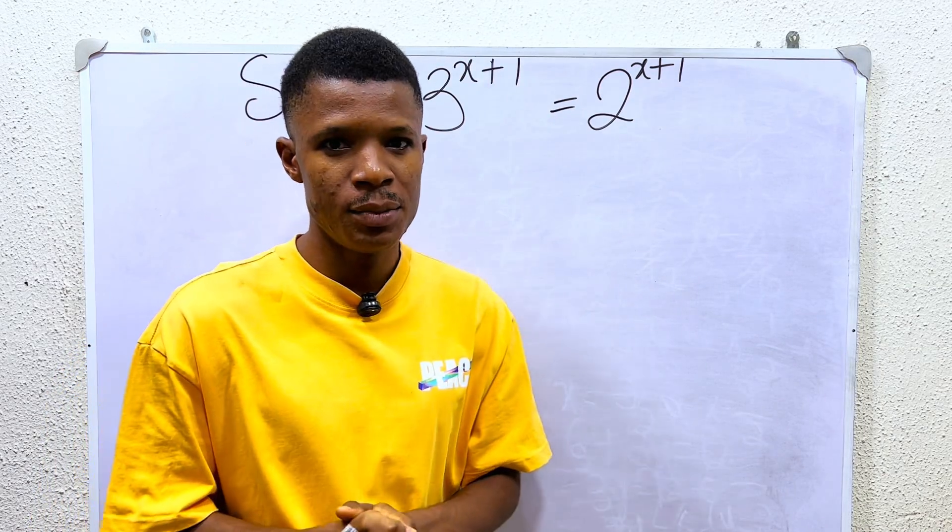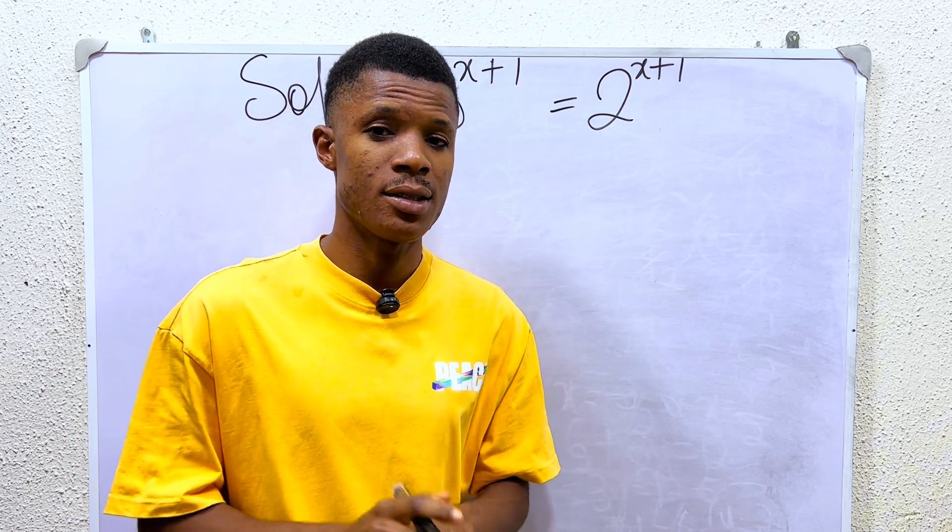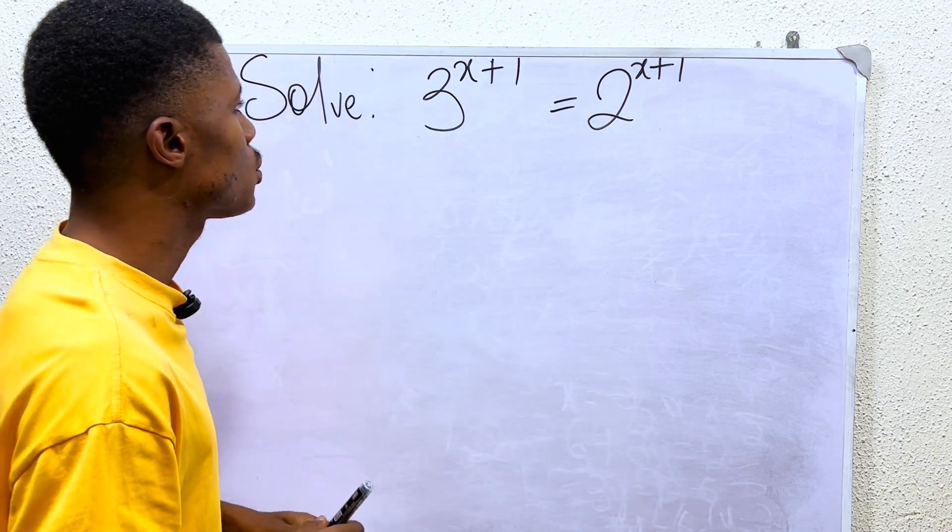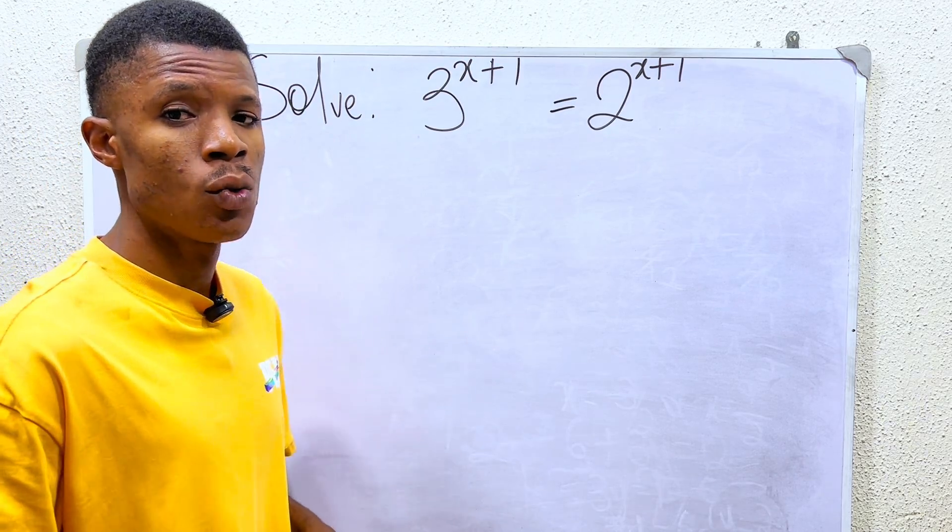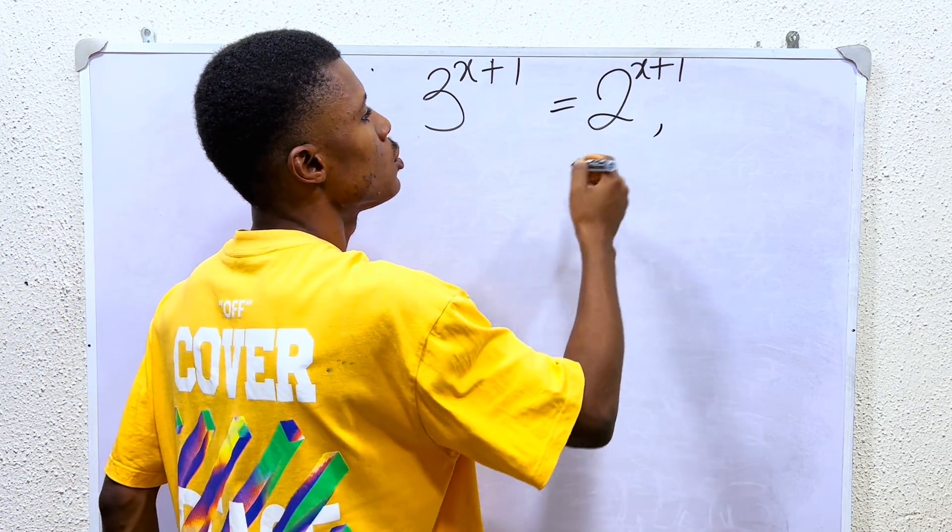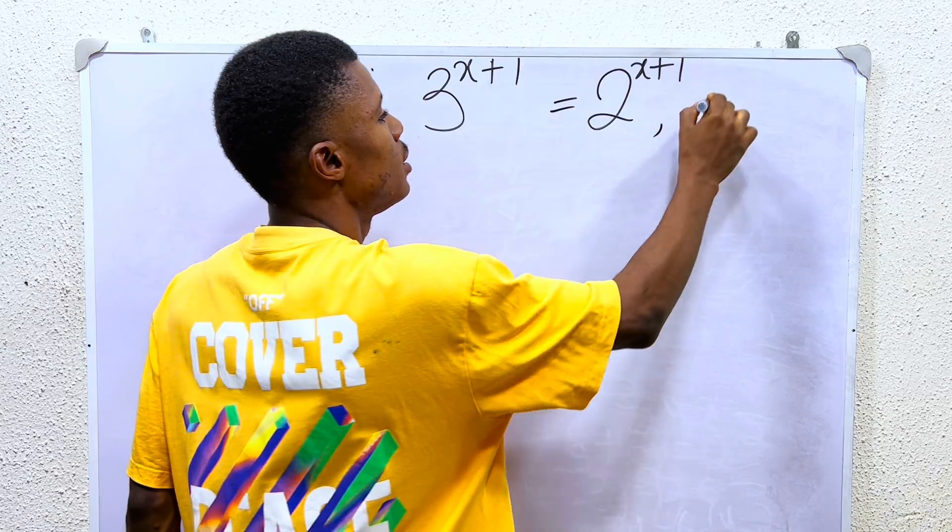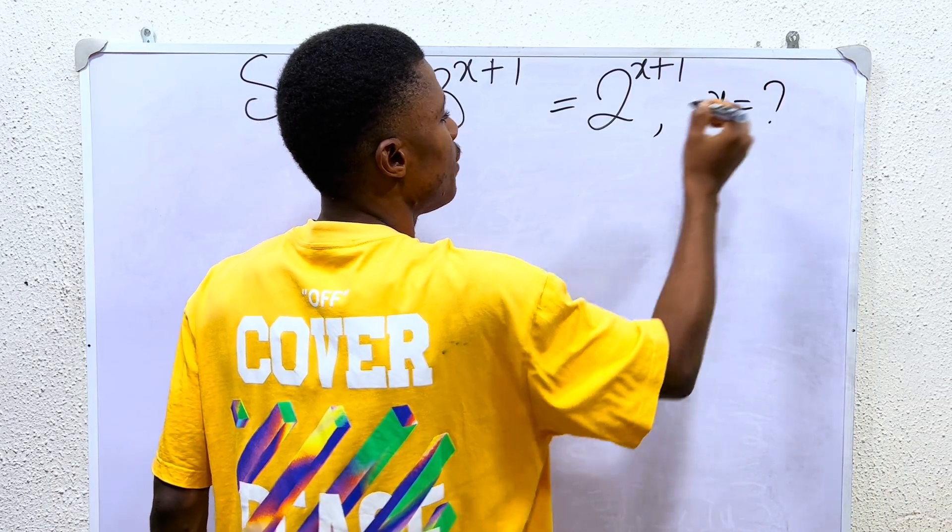Can you solve this Math Olympiad problem in three seconds? Watch. We are told to solve 3^(x+1) = 2^(x+1), and we are looking for the value of x.